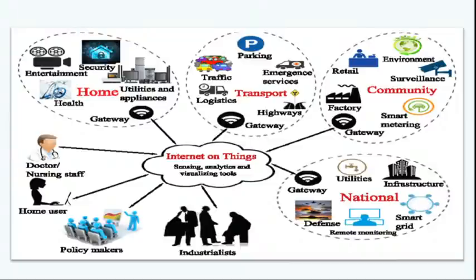Wireless Body Area Network means for persons who are bedridden — we can attach sensor data to them, and based on that sensor data at home, the doctors will automatically give suggestions about medicine and body condition. Based on sensor data, the system will give suggestions. Home users and policy makers can also use IoT. This is the vast area IoT covers nowadays.